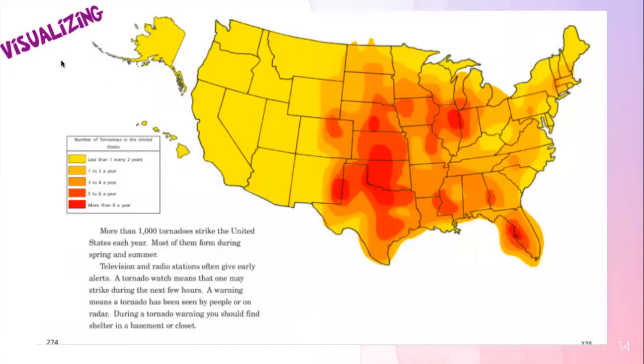More than 1,000 tornadoes strike the United States each year. Most of them form during spring and summer. Television and radio stations often give early alerts. A tornado watch means that one may strike during the next few hours. A warning means a tornado has been seen by people or on radar. During a tornado warning, you should find shelter in a basement or closet.